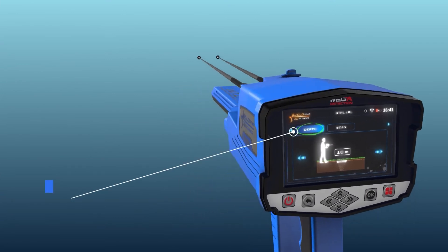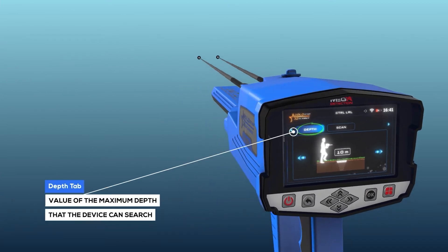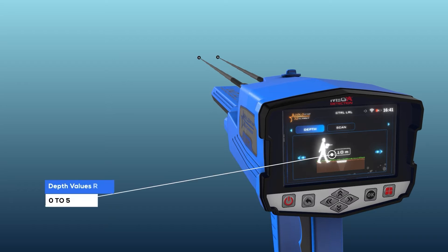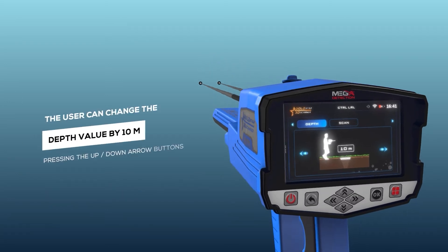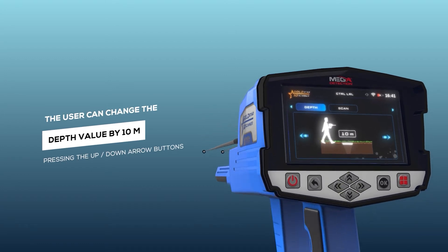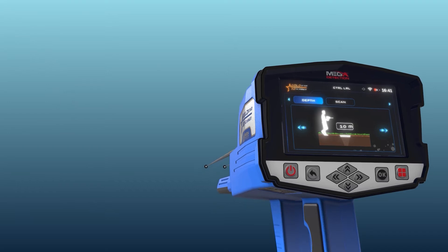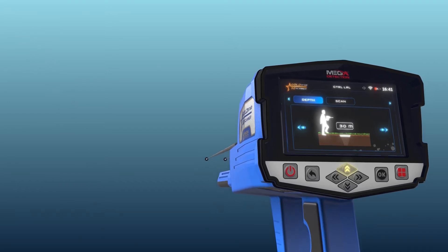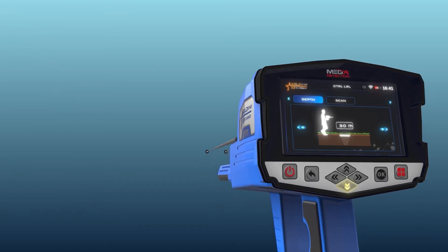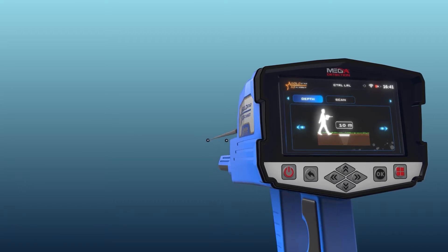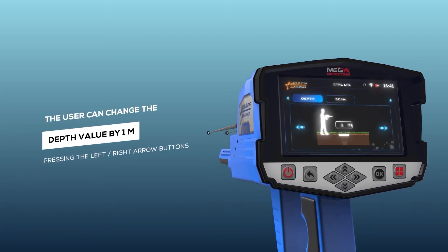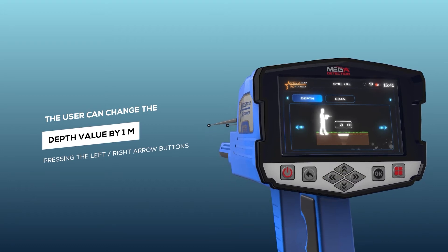Depth: it is the value of the maximum depth that the device can search. The depth value can be set by choosing a value from a set of predefined values within the range from 0 to 50 meters. Note: the user can change the depth value by 10 meters by pressing the up/down arrow buttons, and by one meter by pressing the left/right arrow buttons.